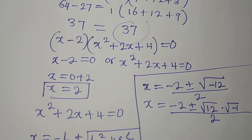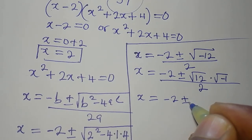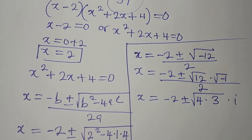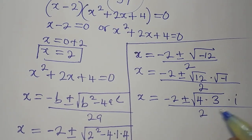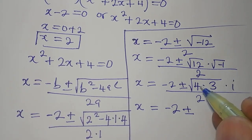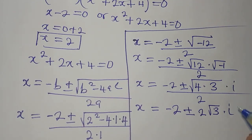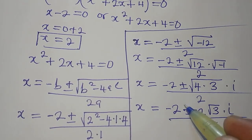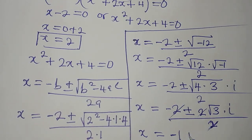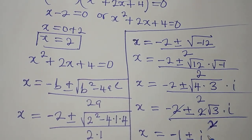Continuing, x equals minus 2 plus or minus 2 times the square root of 3 times i, over 2. The 2 in the numerator and the 2 in the denominator cancel, giving x equals minus 1 plus or minus i times the square root of 3. This is a two-in-one solution.